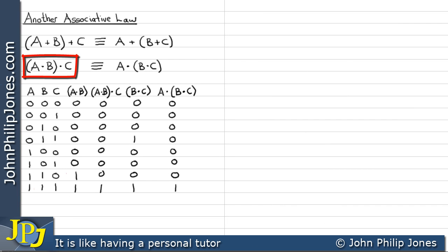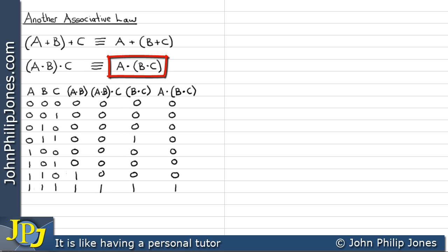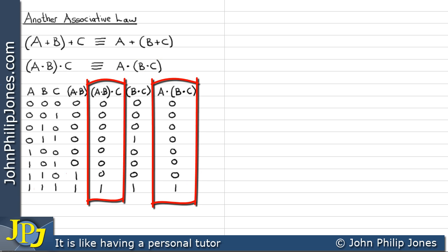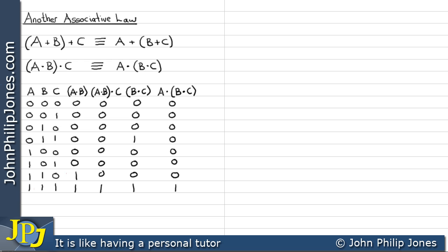The column representing (A AND B) AND C and the column representing A AND (B AND C) are identical — both are zero all the way down except for the last entry, which is one in both cases. Consequently, it is correct to say that these two expressions are equivalent.